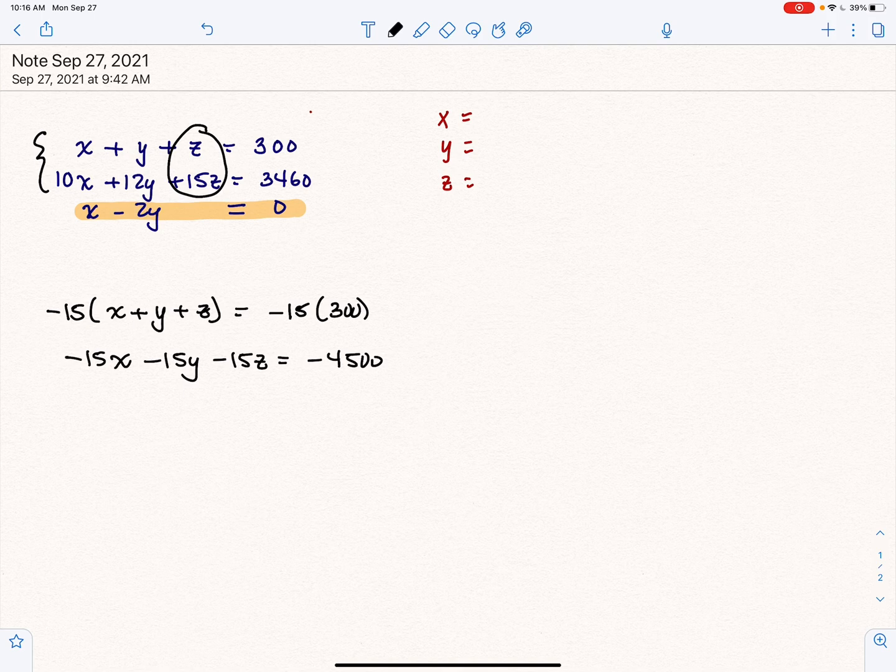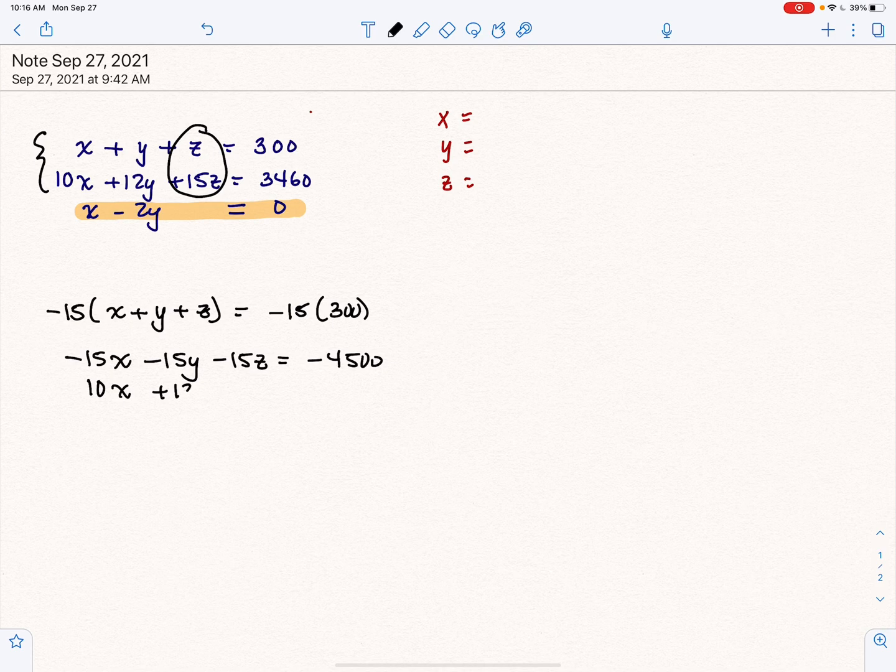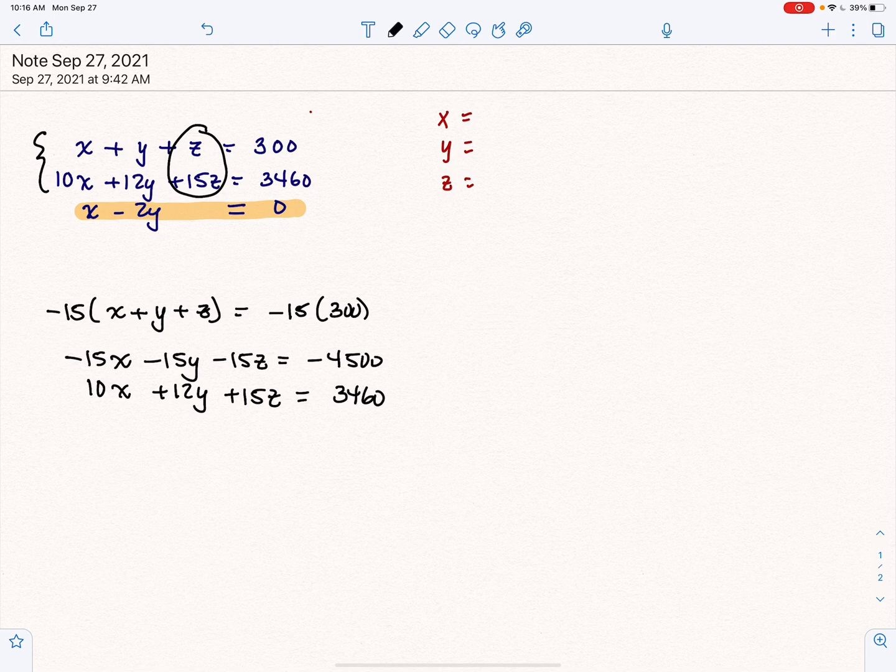And that gives us negative 15x minus 15y minus 15z equals negative 4,500. And then I'm going to couple that with the second equation, the one with the 15 in it, because that was the one that kind of steered everything. And when we do that, we add them together.